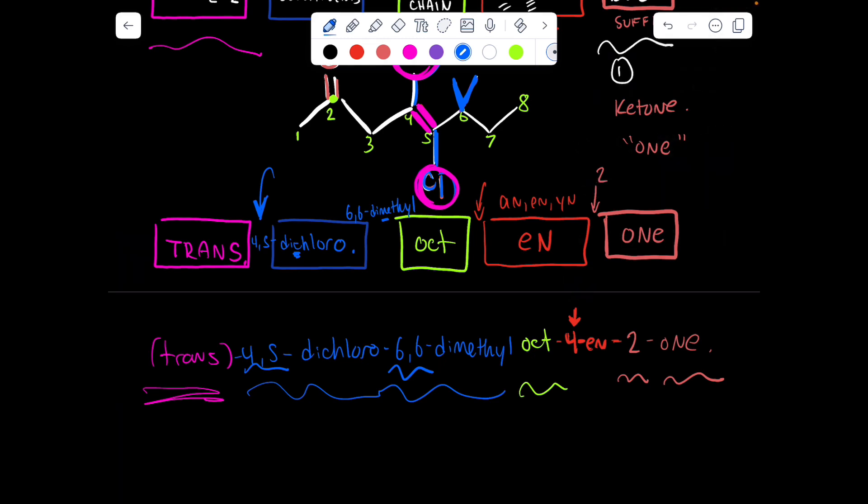And quickly, I want to note, because I feel like this would be a question: trans also corresponds to E in this question. You could have said E for they're on opposite sides, or you could have put trans. It would have been the same thing. Where Z would have been 'zusammen' on the same side. That's what I was told in first year, that little saying to remember it. And then E is when they're on opposite sides. Have a good day.